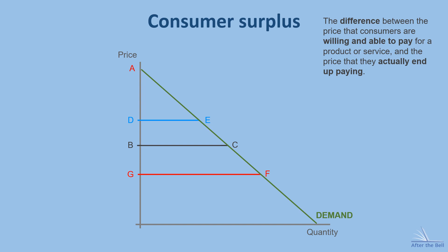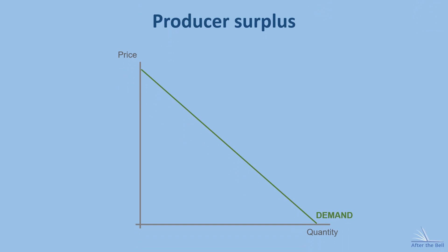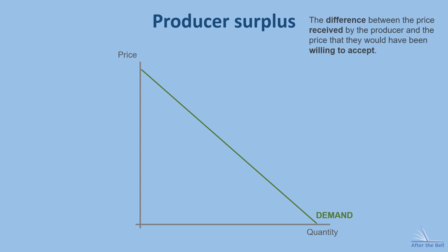While consumers will be trying to obtain the lowest price they can in order to maximise their consumer surplus, producers will be busy trying to charge the highest price possible. In other words, they are trying to maximise their producer surplus. The definition of this is the difference between the price received by the producer and the price they would have been willing to accept, and we can show this on a diagram as well.